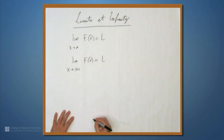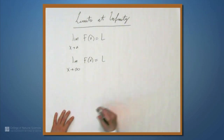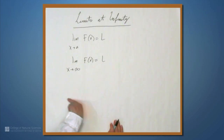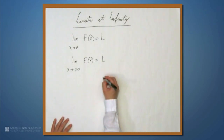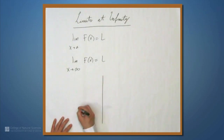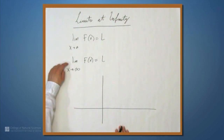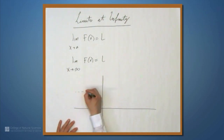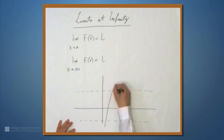If the limit as x approaches infinity of f of x equals L, that's saying something about the long-term behavior of f as you go off to the right of the graph. We can also look at negative infinity, in which case you're going to the left. This is just another way of talking about horizontal asymptotes. So if we have a graph like this with two horizontal asymptotes,